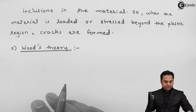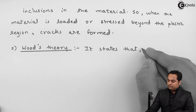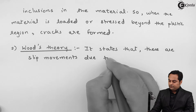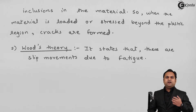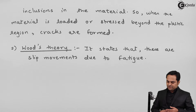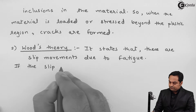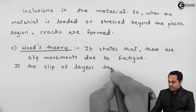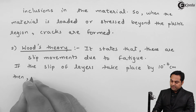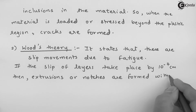Next we have Wood's theory. Wood's theory states that there are slip movements due to fatigue. Fatigue is a kind of repetitive or continuous loading wherein the stress value or the nature of stress changes. The theory states that if the slip of layers takes place by 10 raised to minus 7 centimeters, then extrusions or notches are formed within the material.